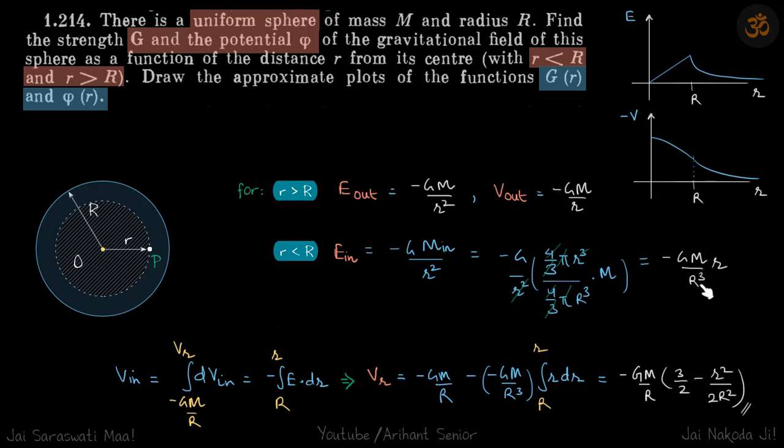So we'll do that and we'll put the value of E as this. So V(r) comes to be minus GM by R minus, so we put this E here and if we do the integral, that will be minus GM by R cubed into integral r dr. So this will be r squared by two, and if you put the limits you will get your answer as this. So this is the potential inside.